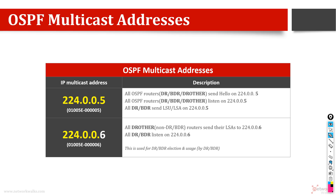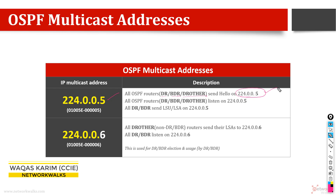Why not one? Because 224.0.0.5 is more common and OSPF uses it for a specific purpose. There are three types of OSPF routers: Designated Router (DR), Backup Designated Router (BDR), and DR-other, which means everyone else. All OSPF routers send hello messages on this multicast address 224.0.0.5.